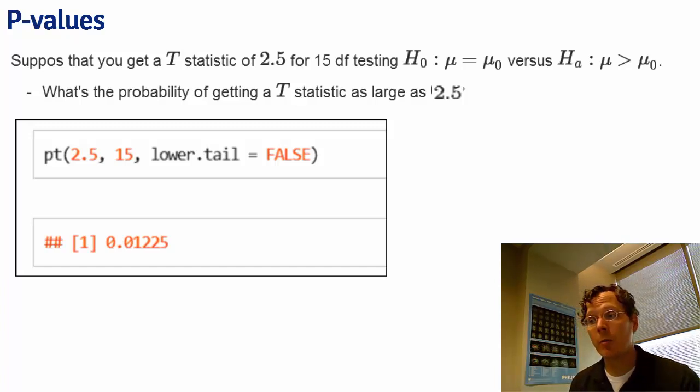Therefore, the probability of seeing evidence as or more extreme than actually obtained under the null hypothesis is 1%. So either the null hypothesis is true and we've seen an exceptionally large T statistic, or the null hypothesis is false.